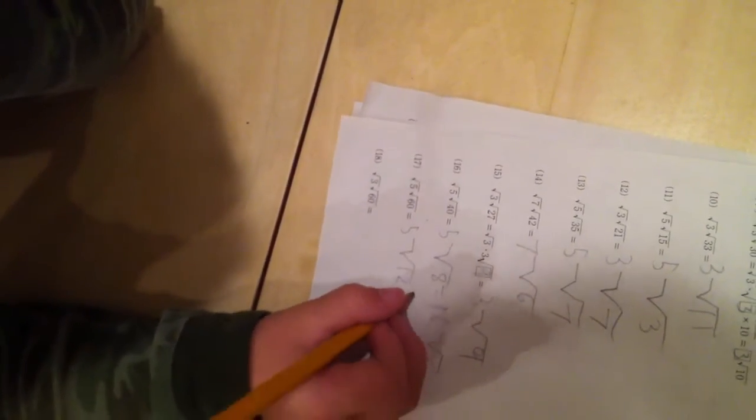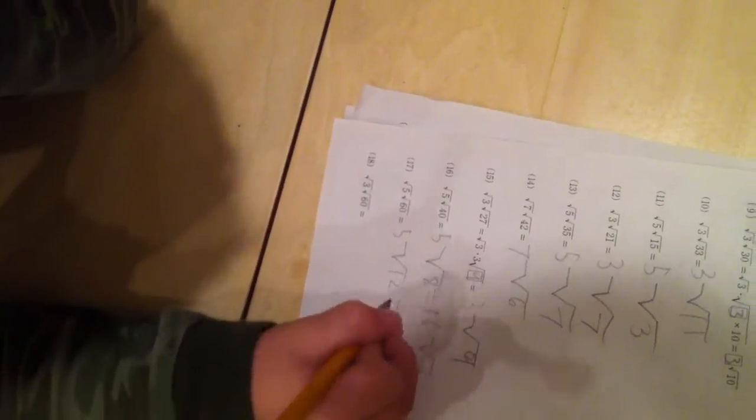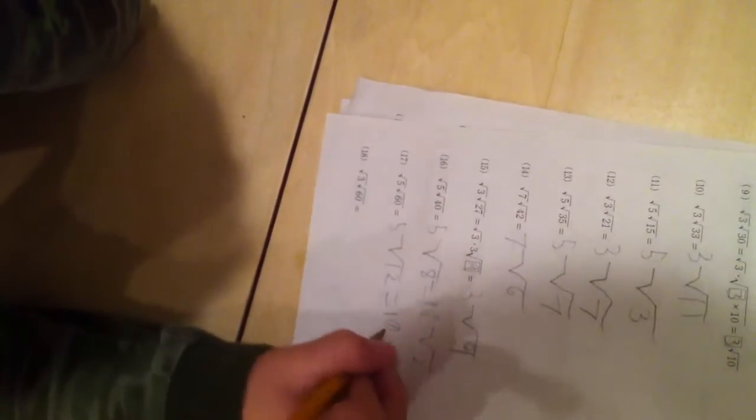And this one we can. It'll be 2 times the square root of 3 is 10 times the square root of 3. That's right, 10 times the square root of 3. And number 15, the same thing, is it? Yeah, look at number 15.